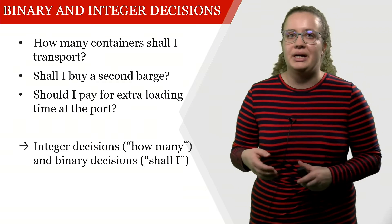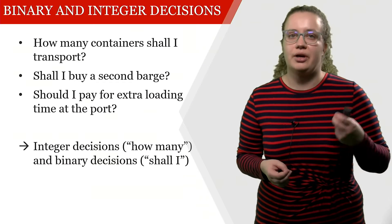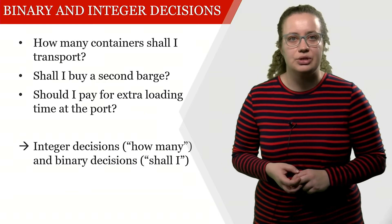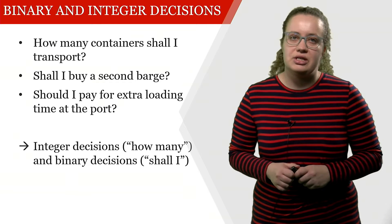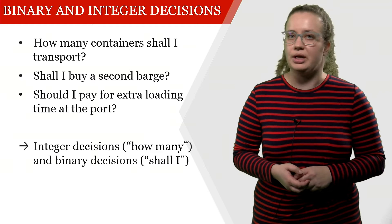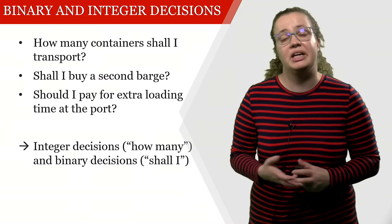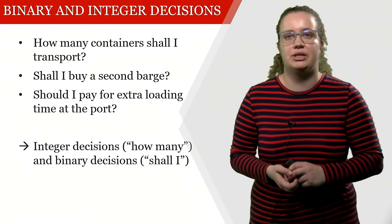Let's remember what binary and integer decisions are, which are a key component if we look into linking constraints. For instance, an integer decision could be how many containers shall I transport. I don't want to transport half a container, but I could transport three or four containers.